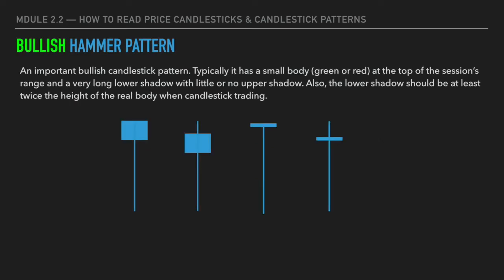The first pattern is called a bullish hammer pattern. It typically has a small real body at the top of the bar and a very long lower shadow with very small or even no upper shadow. Generally, the lower shadow should be at least twice the height of the real body. The bars can be either green or red. The bullish hammer pattern deserves your attention because it shows two important signs: first, the potential exhaustion of the selling pressure; and second, that the buying power overtook the selling pressure on the day.